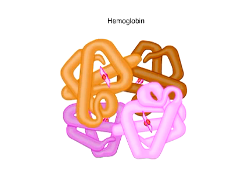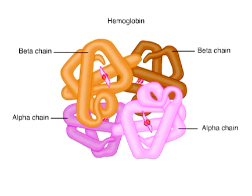Hemoglobin, the red oxygen-carrying protein of blood, is an example of a protein with quaternary structure. It consists of two kinds of polypeptide chains. Two of each, a total of four chains, make up each hemoglobin molecule.